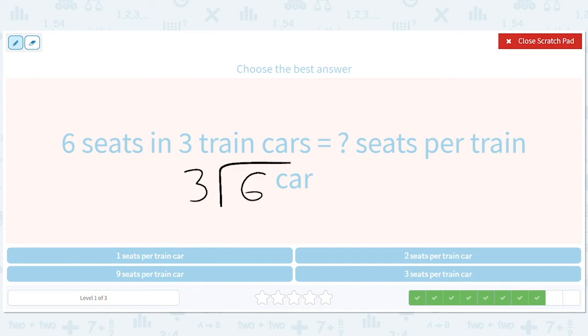Six seats in 3 train cars, how many seats per train car? So 6 seats divided by 3 is 2, 2 seats per train car. Okay, let me actually draw a picture here. So there's train car 1, train car 2, train car 3, and there's 6 in all, so there's 2 per train car.